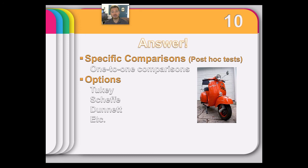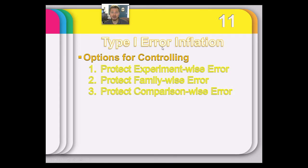Type I error is the probability of getting excited about finding something when it really wasn't that special. If you do 20 tests each at alpha 0.05, one of them will be significant just by chance. You want significance because it's really telling us about something in the world. So we look at ways to reduce type I error risk — making our criteria more rigorous. One of the most common and simple corrections is the Bonferroni correction.